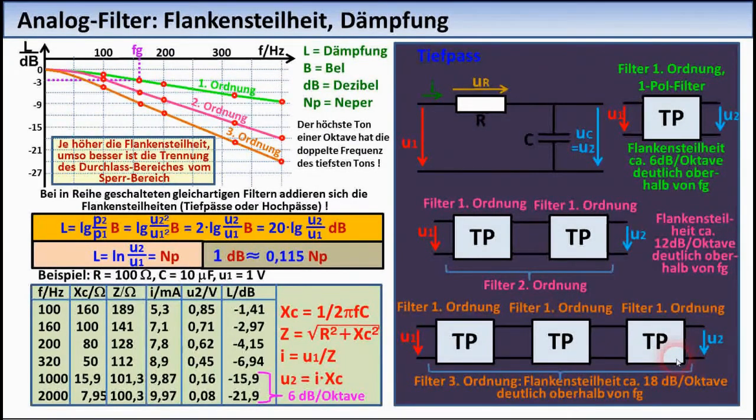Although Bel and even more so decibel are very widespread and common, they do not belong to the international SI unit system. The less common unit Neper belongs to the SI system, which results from taking the natural logarithm Ln.